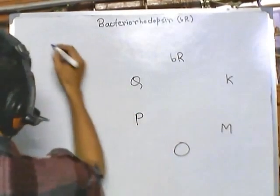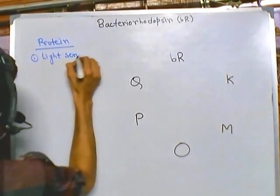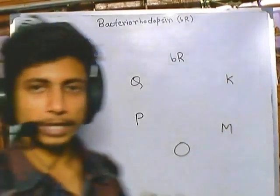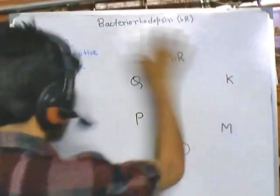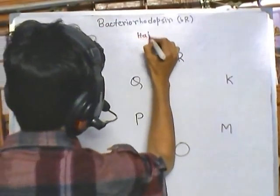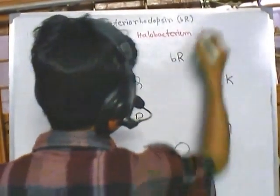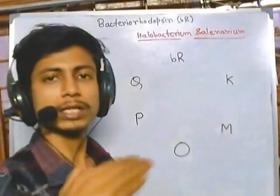Bacteriorhodopsin changes its structure depending upon the light wavelength. The two major properties are: it is a light-sensitive protein, and second, it is heat stable. This protein is usually found on the membrane surface of bacterial cells. One example of a bacteria having bacteriorhodopsin is Halobacterium salinarium, which has this bacteriorhodopsin as a light-sensitive protein on their membrane surface.